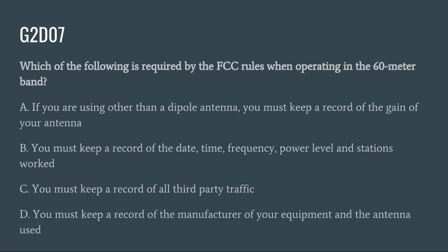G2D07: Which of the following is required by the FCC rules when operating in the 60 meter band? A. If you are using other than a dipole antenna, you must keep a record of the gain of your antenna. B. You must keep a record of the date, time, frequency, power levels, and stations worked. C. You must keep a record of all third-party traffic. Or D. You must keep a record of the manufacture of your equipment and the antenna used. The correct answer is A: if you are using other than a dipole antenna, you must keep a record of the gain of your antenna.